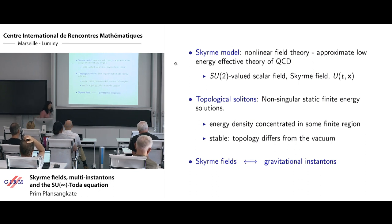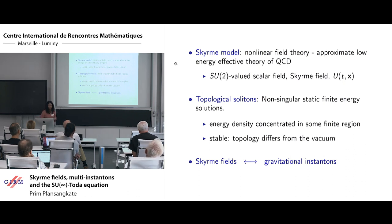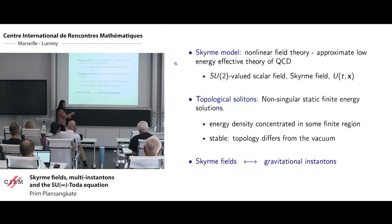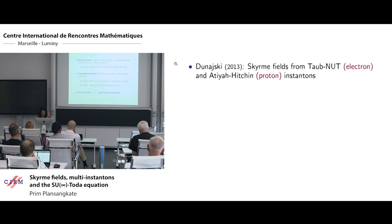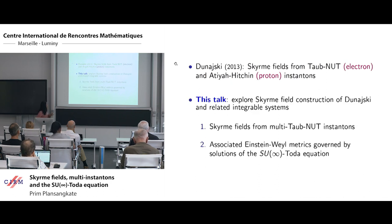Their stability is due to the topology. That's why it's called topological solitons, that the topology differs from the vacuum solution. It would be interesting to have a more direct relation between the Skyrme model and the model of Atiyah-Manton-Schroers.